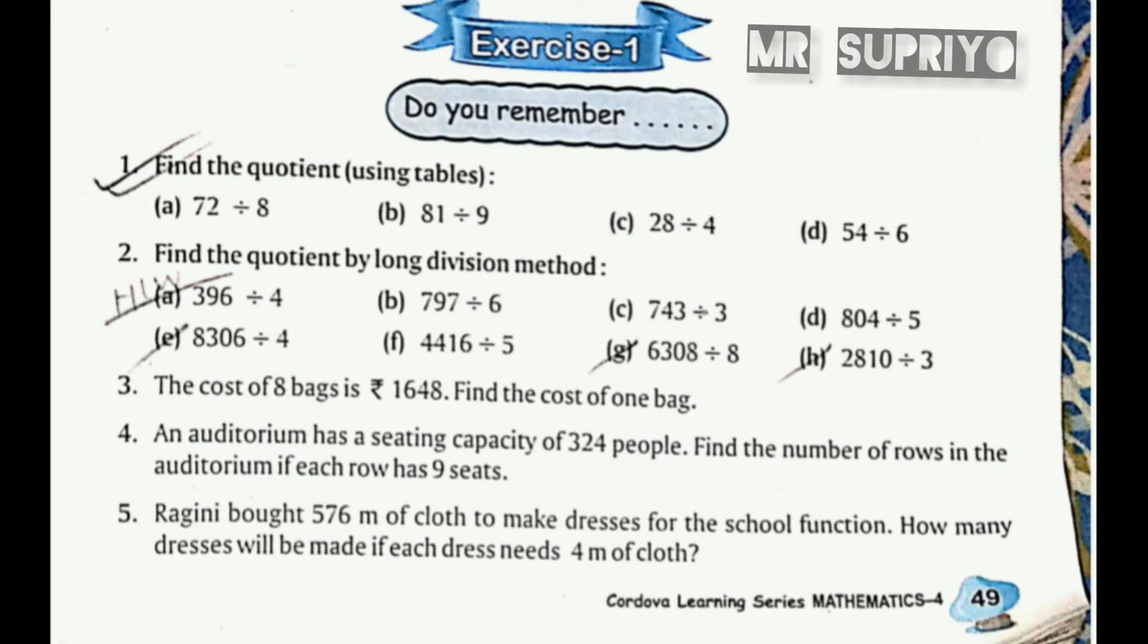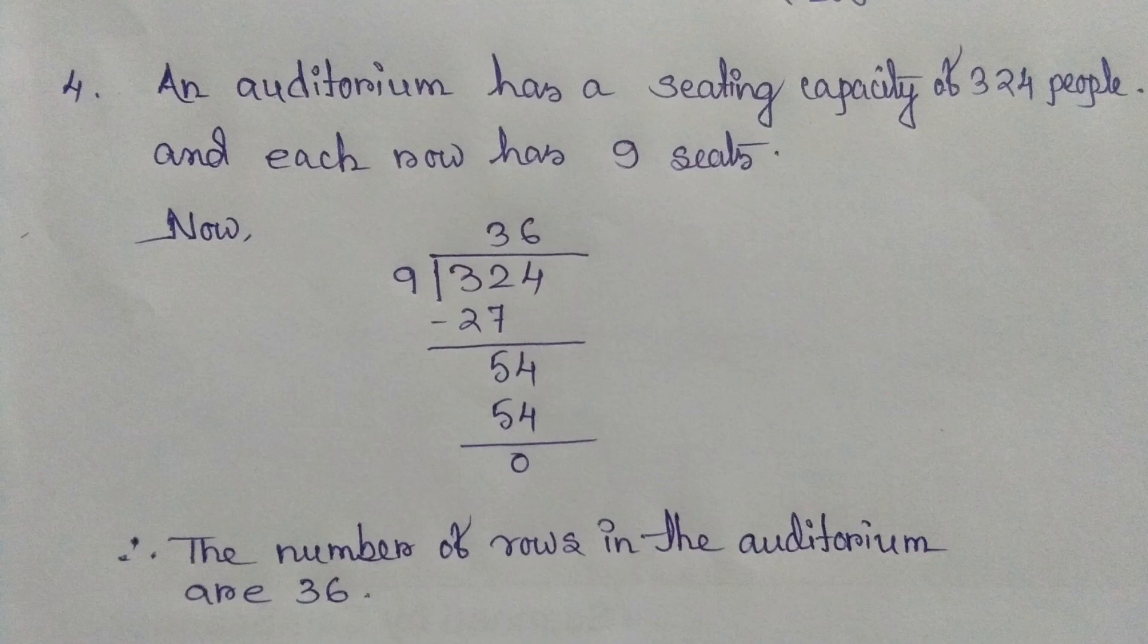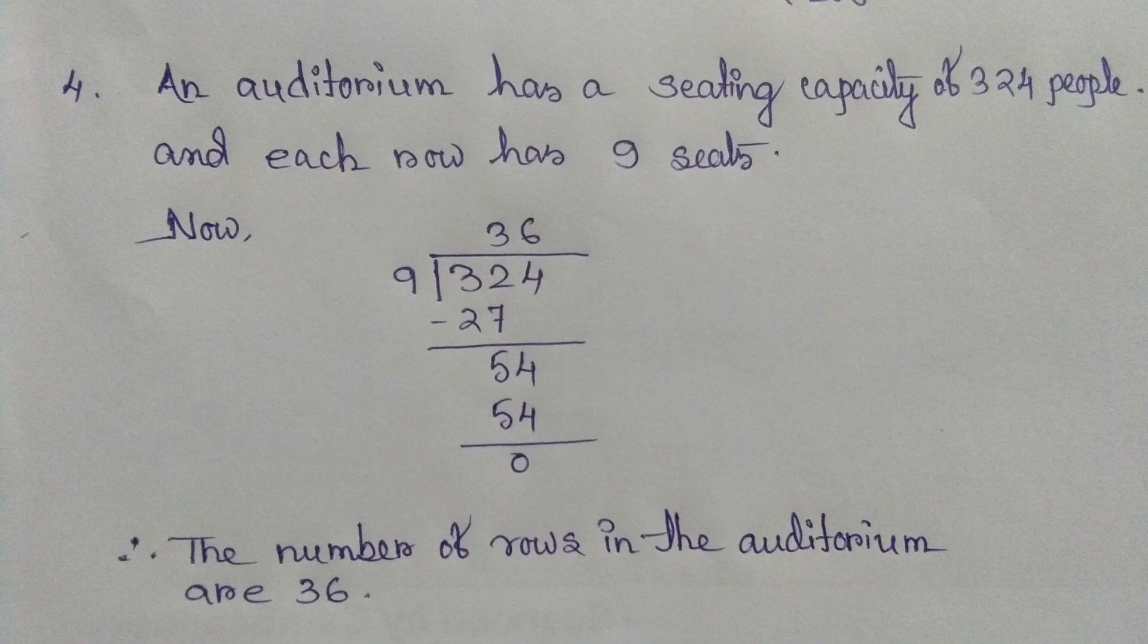Question 4: An auditorium has a seating capacity of 324 people. Find the number of rows if each row has 9 seats. Solution: 324 divided by 9. 9 times 3 is 27. 32 minus 27 equals 5. Bring down 4 to get 54. 9 times 6 is 54, so remainder is 0. The quotient is 36, so the number of rows in the auditorium are 36.